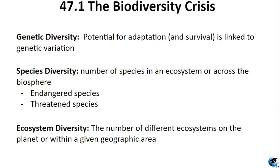Biodiversity encompasses genetic diversity, species diversity, and ecosystem diversity. Genetic diversity focuses on the variety of genes within a species — the diversity of genetic material within populations of the same species — allowing for adaptations to changing environments and providing the basis for evolution. Species diversity is the variety of different species in a particular area; it includes the number of species present, known as species richness, and their abundance relative to one another, known as species evenness. Ecosystem diversity considers the variety of ecosystems, habitats, and ecological processes in a larger region, including different types of forests, grasslands, wetlands, deserts, and other ecosystems, each with their unique sets of species and environmental conditions.